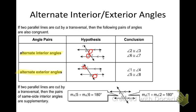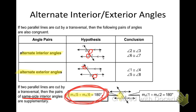The only one that is different — look at angles five and six. What type of angles are those? They're not corresponding, not alternate interior — those are same side interior angles. What do you notice about same side interior angles? They are supplementary.